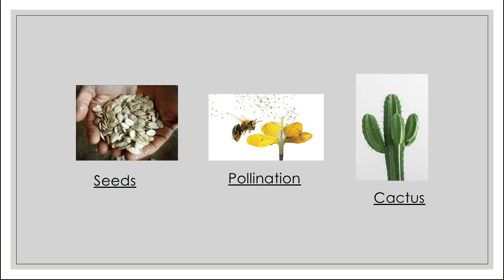The other three pictures: the first picture is seeds — seeds which we dig into the earth and then grow a plant or tree. The second picture is of pollination — pollination is a process that includes a bee that takes grains from one flower to another. Then we have cactus, which is a type of plant.